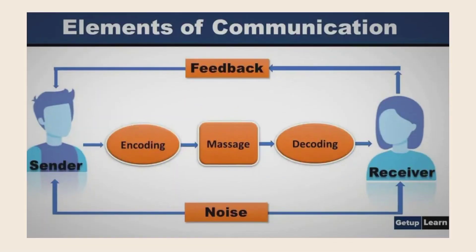Now let us focus on how the communication process works. The communication process begins with the sender or speaker. The sender encodes ideas into an understandable message, and once converted, the message is transmitted to the receiver through a transmission or signal. The receiver then decodes it and gives feedback to the sender. And that is how the communication process works.